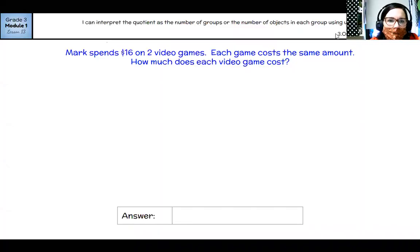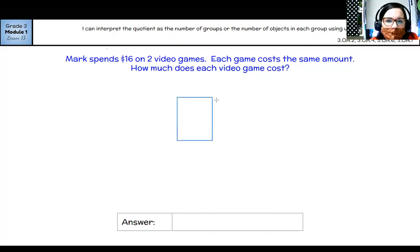Okay, Mark spent $16 on two video games. Each game costs the same amount. How much does each video game cost? Okay, so let's think about what I do know. I do know that there are two video games. So I'm going to make two brackets in my tape diagram. And I know that all together he spent $16. And I need to share that between these two games so I can fair share to figure this out.